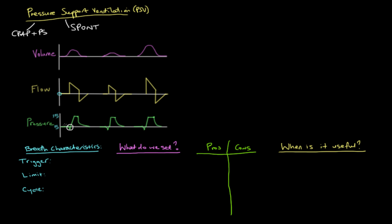Once triggered, the ventilator increases the pressure from 5 up to a certain point — here it increases up to 15, so the difference is 10. The patient makes an effort to breathe and the ventilator increases the pressure in the circuit from the baseline pressure up to a point we decide. That increase in pressure causes flow to enter the patient's lungs. On the flow waveform, when the patient takes the breath there's a sharp increase in flow, leading to the peak inspiratory flow (PIF).